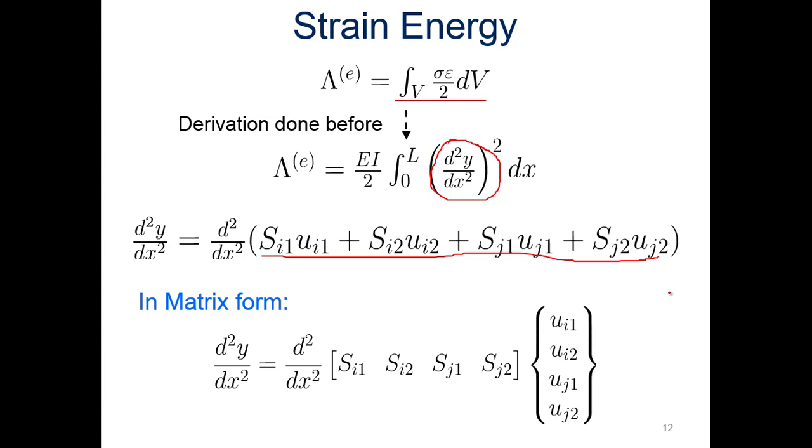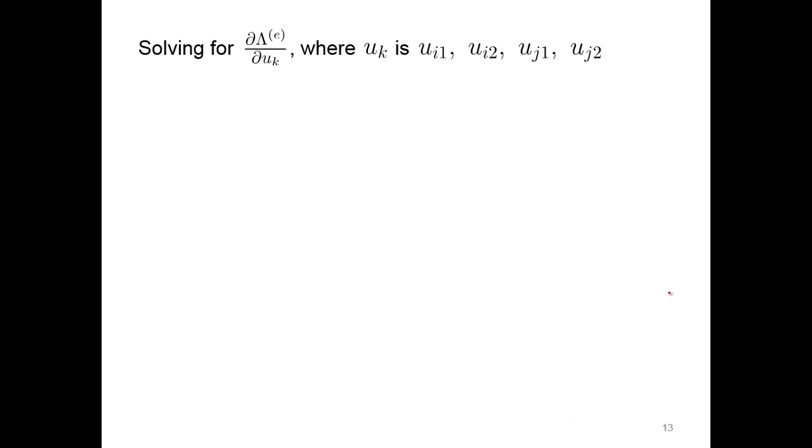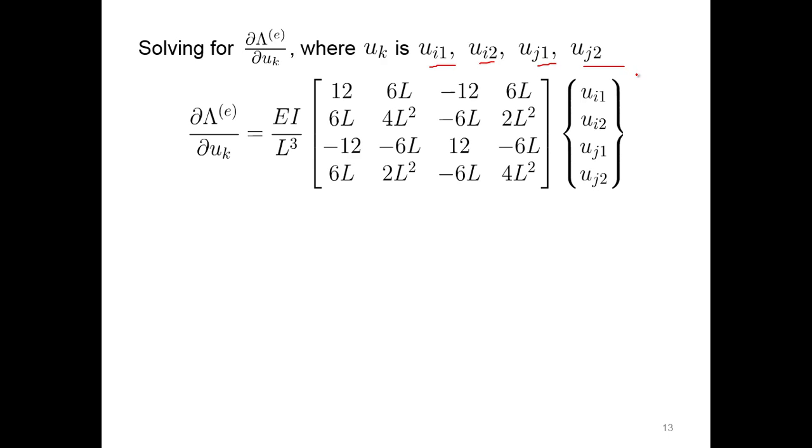We're going to plug all that in because we're going to differentiate that twice with respect to X. So there it is in matrix form. If we solve for that, and we're going to differentiate with respect to the displacements—and the displacements are the lateral displacements at both nodes, so ui1, uj1, and also the rotation at nodes I and J—we come up with this.